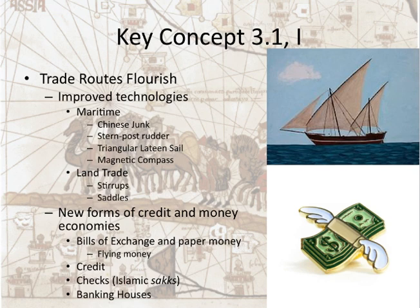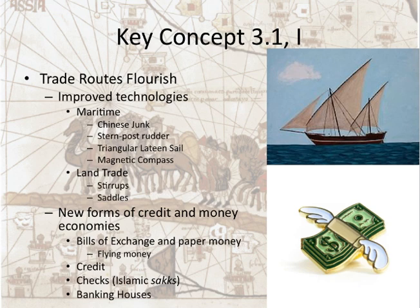Paper money could be used on either end of the empire — a very effective way of buying goods. You also see the advent of credit in these big empires, where people were allowed to buy things and pay for them later. The Islamic empire mastered checks, meaning you could buy something with a check indicating you had the money elsewhere, guaranteeing the seller payment later. And you see the emergence of banking houses throughout empires and urban centers to handle all these new forms of credit and money economies.